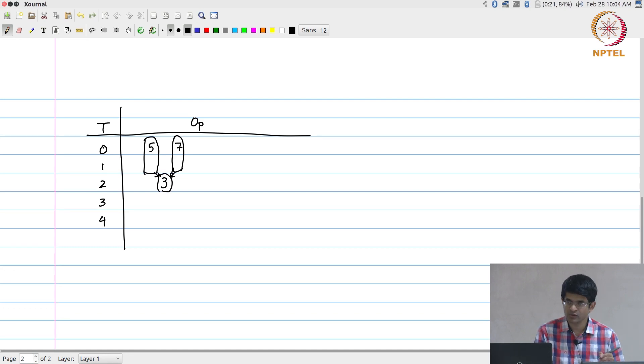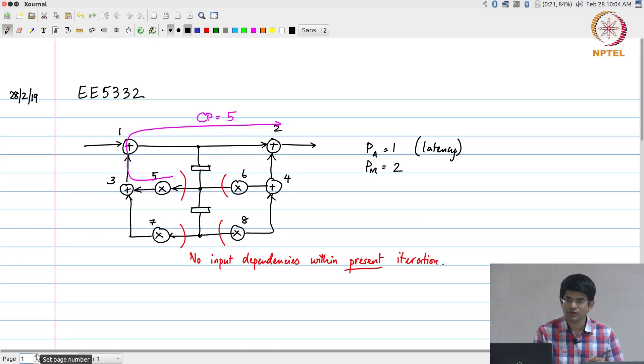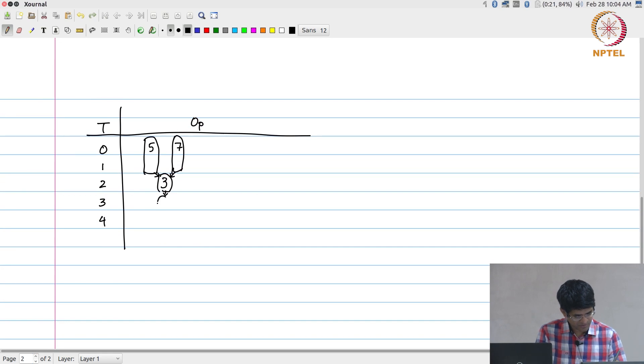There are dependencies over here. 3 depends on the output of 5 and output of 7, that is why I am drawing an arrow between in this way. The next thing is the output of 3 is consumed by 1, and the output of 1 is consumed by 2. Now obviously 1 has one more input which is the external input. I am not drawing that explicitly because it is not one of the operations I need to schedule, that is all.